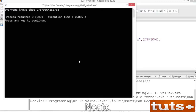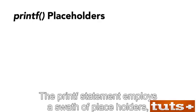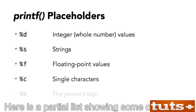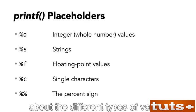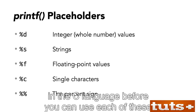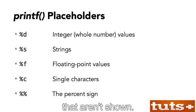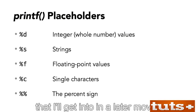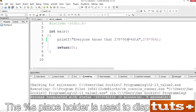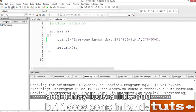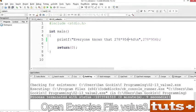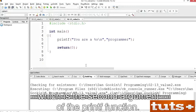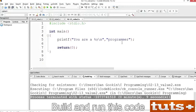The printf statement employs a range of placeholders, each for a specific type of value. The %s placeholder is used to display strings. Open exercise file value3.c — in this code, %s represents the string 'programmer', which is the second argument of the printf function. Build and run this code, and indeed, you are a programmer. Modify line 5 to add another placeholder and argument. Place %c before %s with a space in between. Add a single-quoted argument: 'C' (big C). In C, single characters are specified with single quotes; double quotes create a one-character string, which doesn't match the %c placeholder.